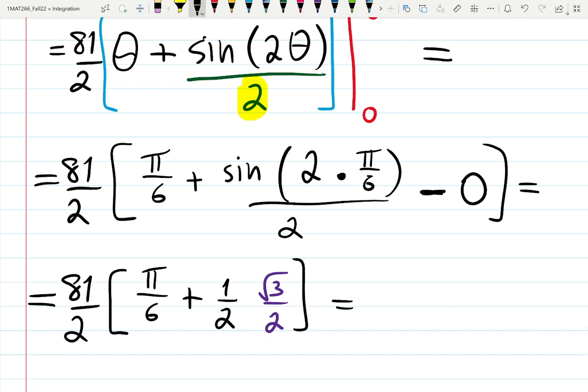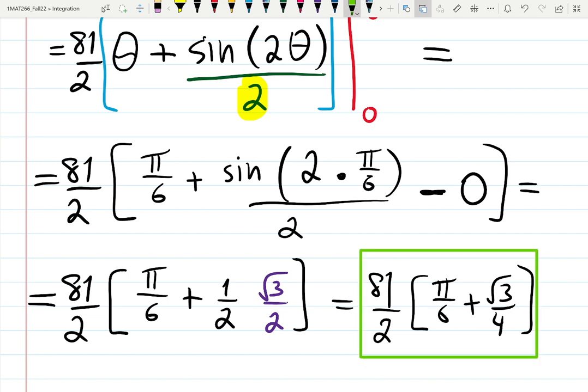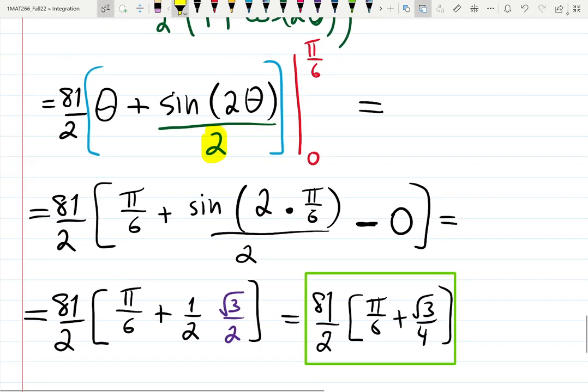Finally, we can simplify it to be 81/2(π/6 + √3/4). That is the final answer, which is some kind of number. And we never went back to the right triangle, which is very pleasant, but we did not have to do that because we already changed limits of integration.